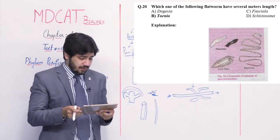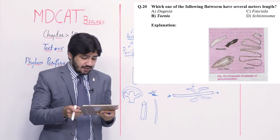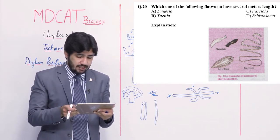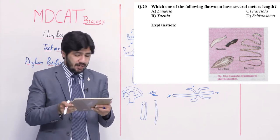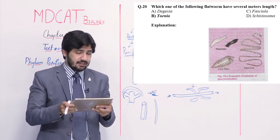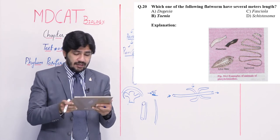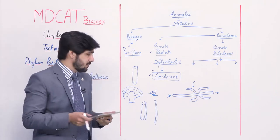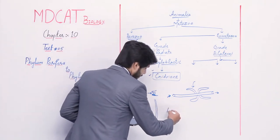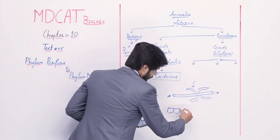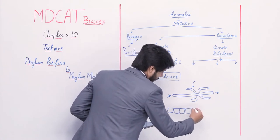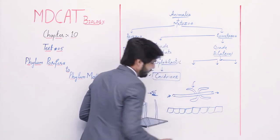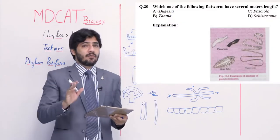Question number 20: which flatworm has several meters length? — alpha Dugesia, beta Taenia, charlie Fasciola, and delta Schistosoma. Right option is beta — Taenia — because its body is segmented. Lengthwise it can reach several meters. Each segment is called a proglottid. Its body is ribbon-like.